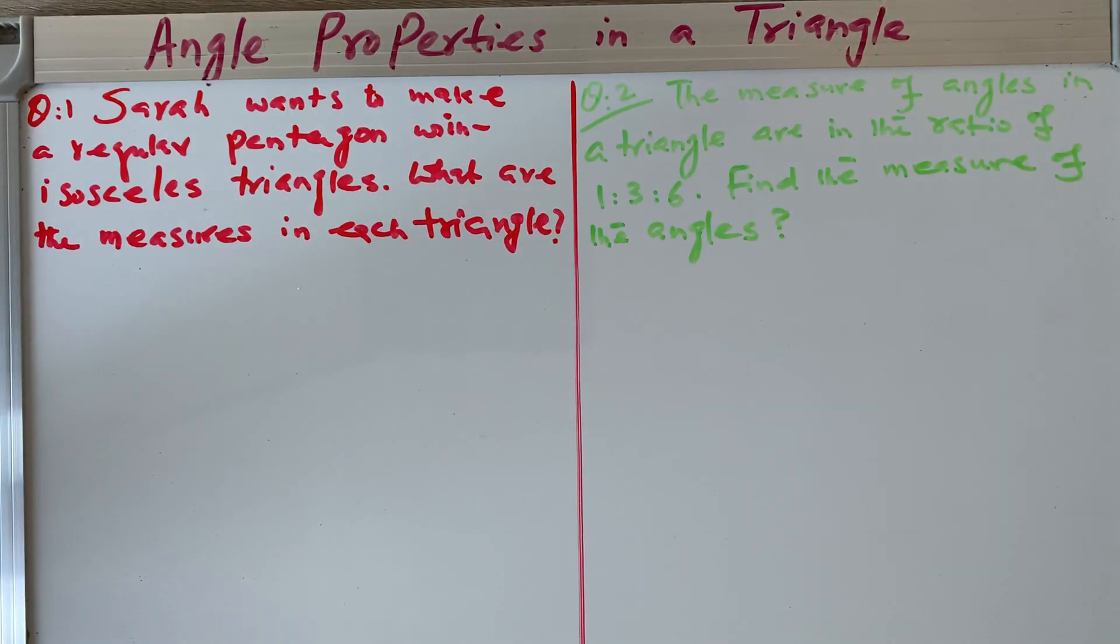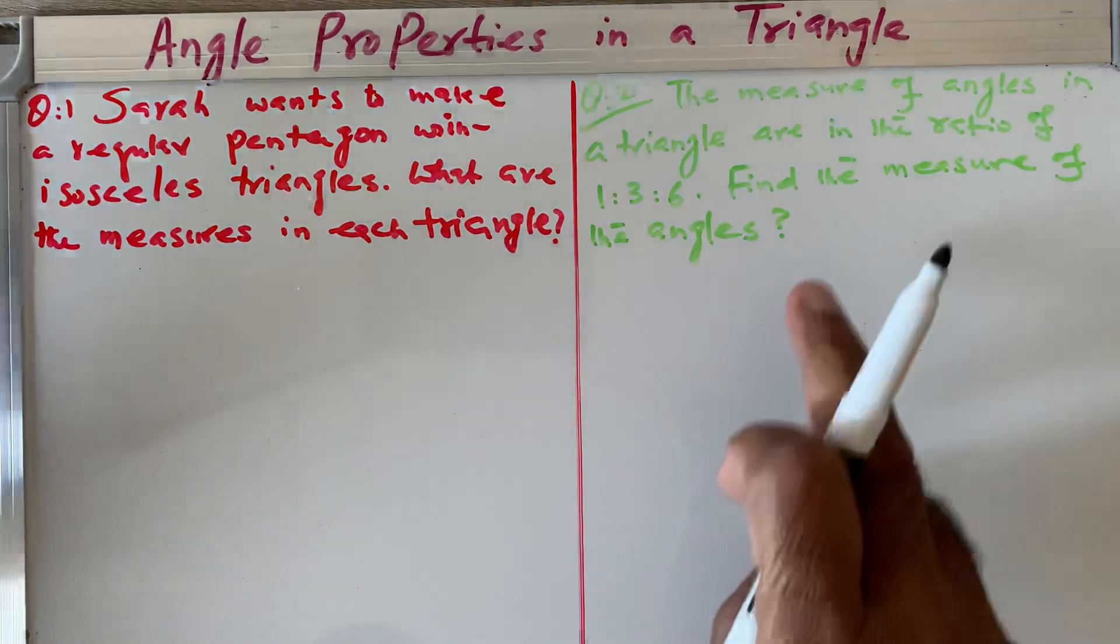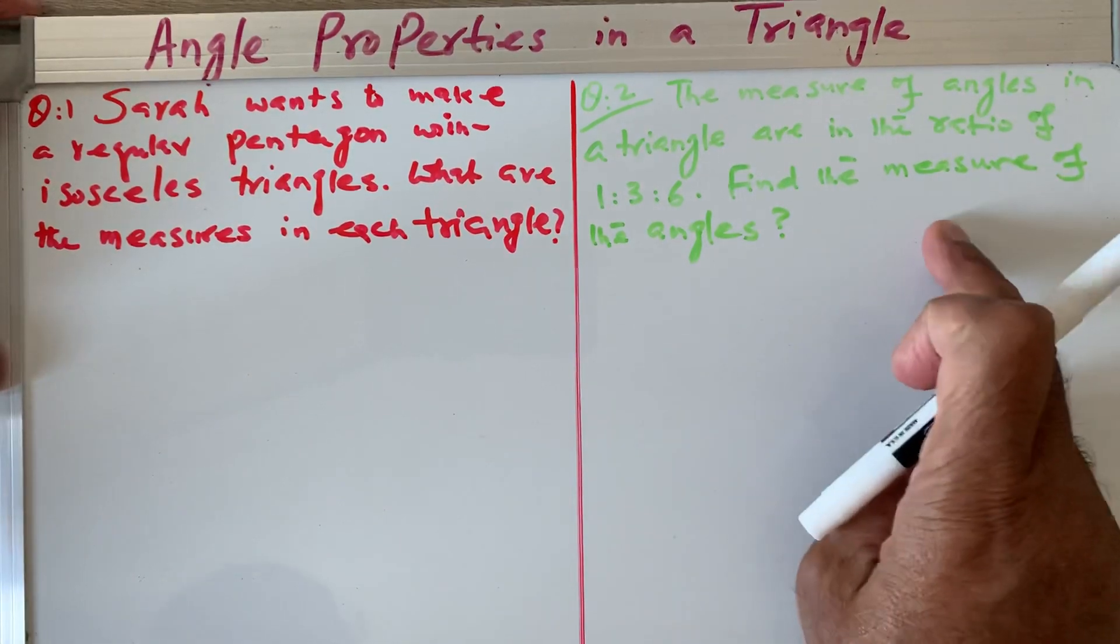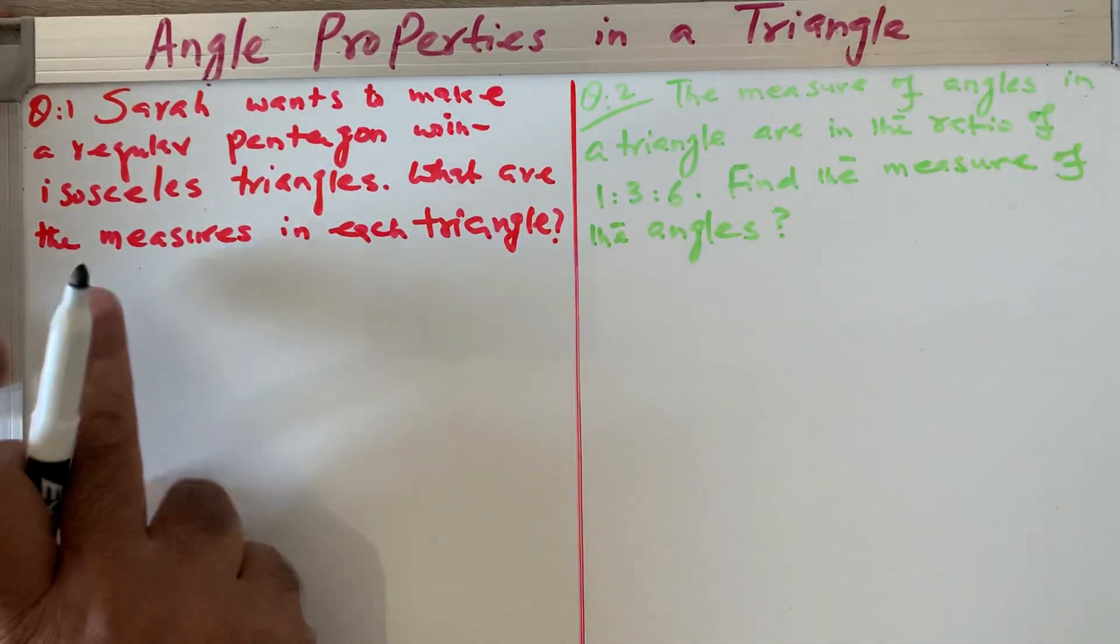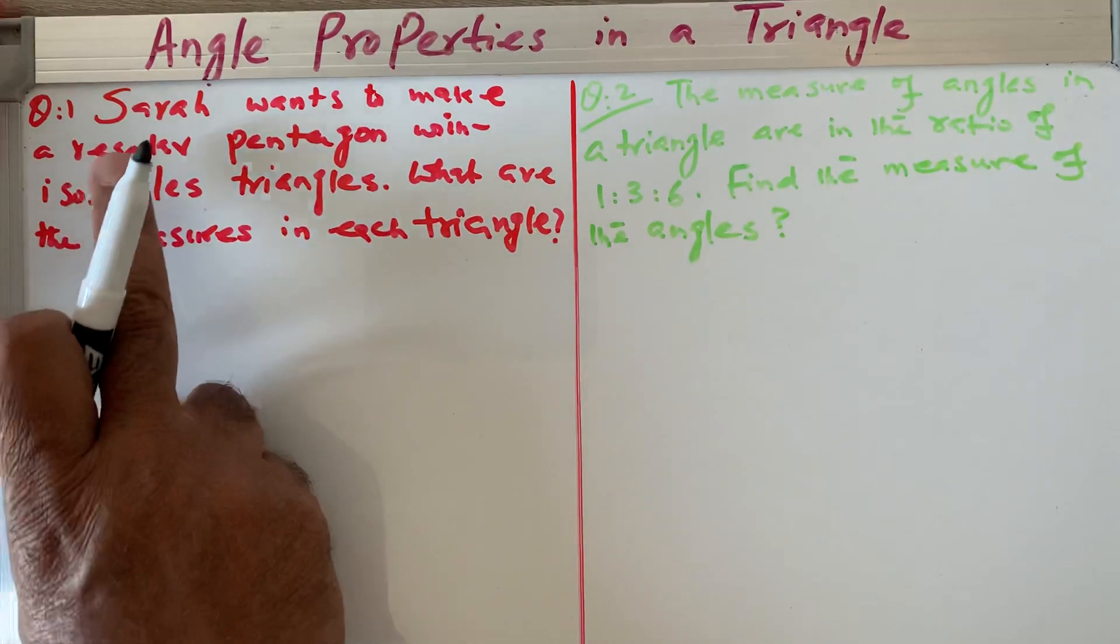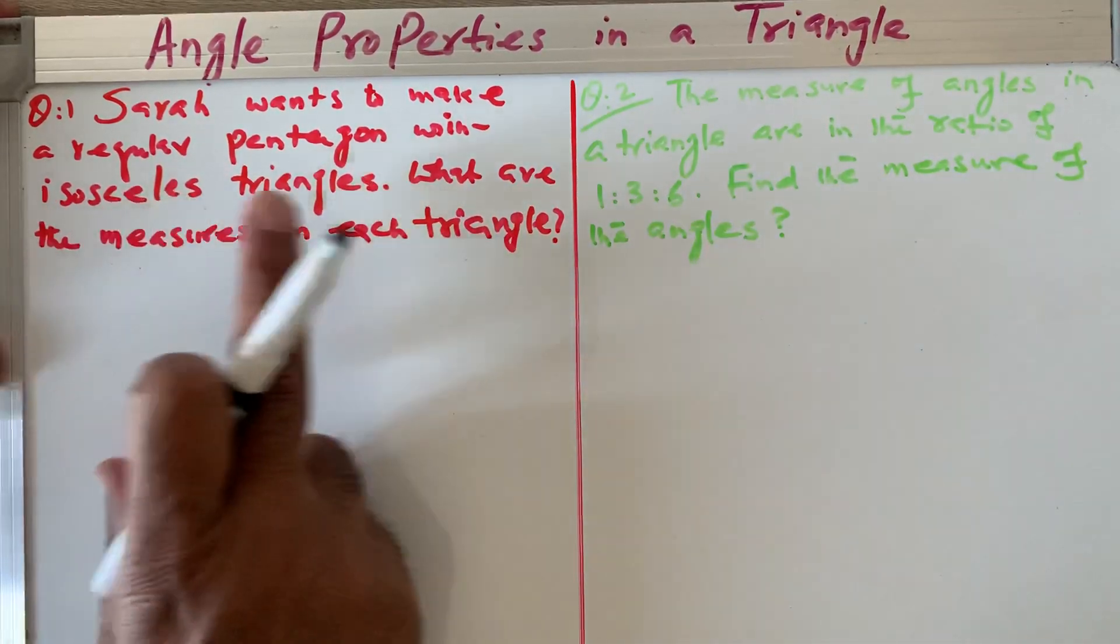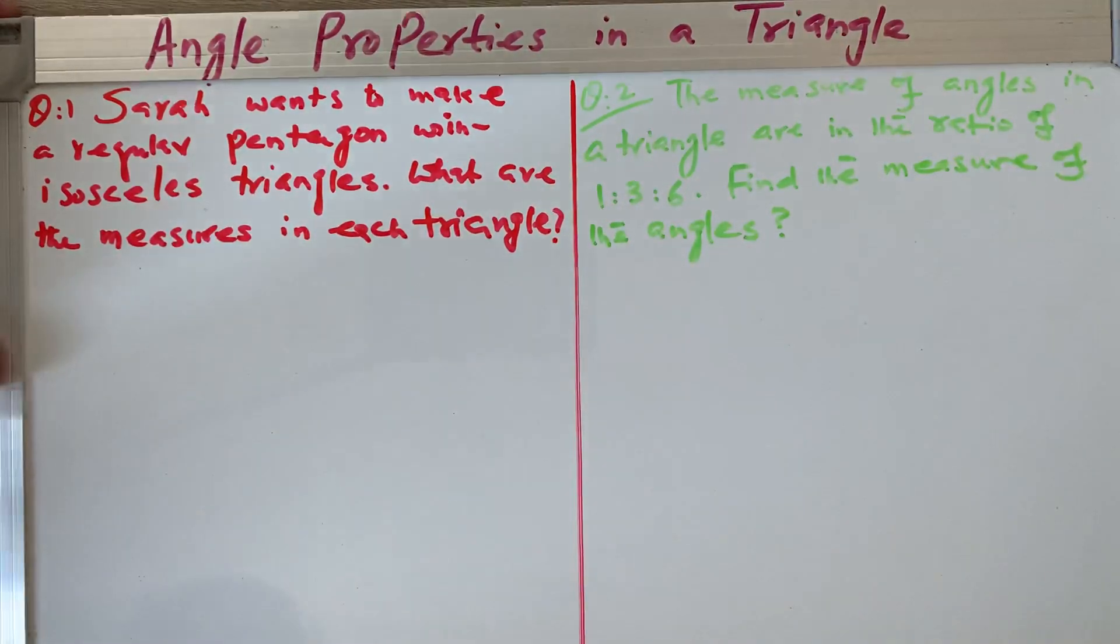So we have two questions here. I will read the first one for you in green. Question one: Sarah wants to make a regular pentagon with isosceles triangles. What are the measures in each triangle?